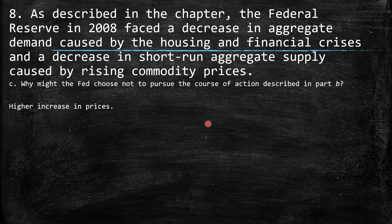Why might the Fed choose not to pursue the course of action described in part B? In the case that the aggregate supply shift was larger than the aggregate demand shift, we are facing a higher level of prices. So the Federal Reserve may be discouraged from making this change because it would generate a higher increase in prices — an inflation pressure. I hope this has helped. This one was kind of tricky because these are more open questions, but I hope it helped you understand them better. See you in the next video. Bye.